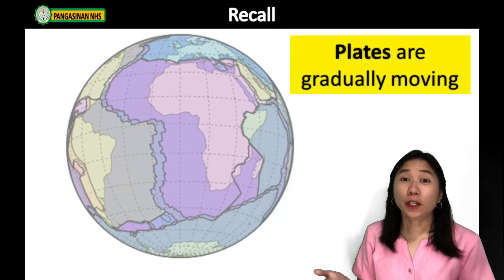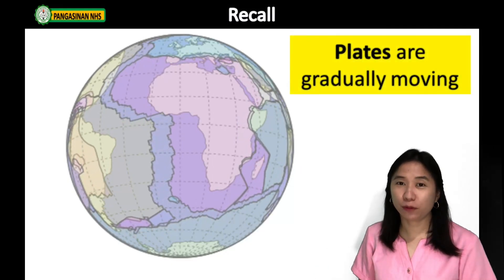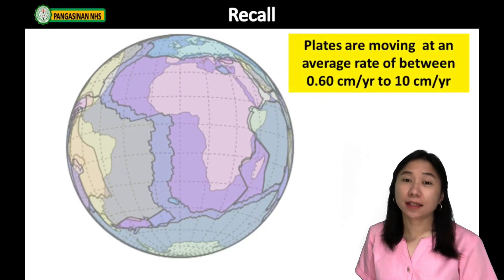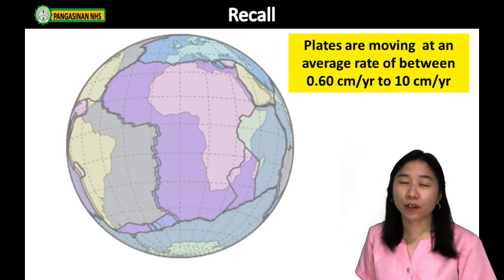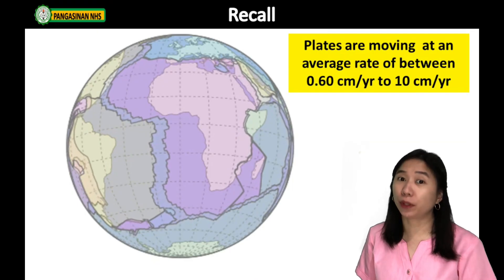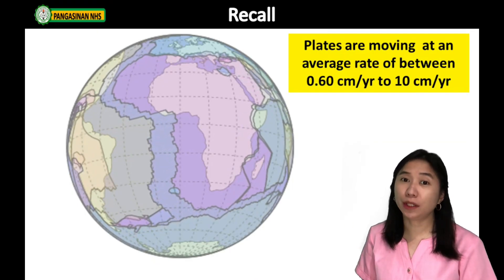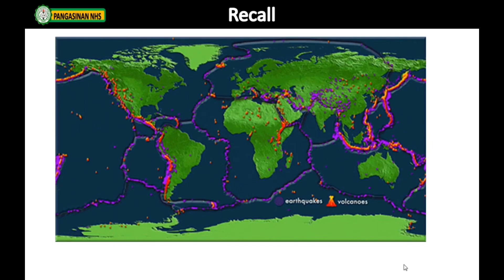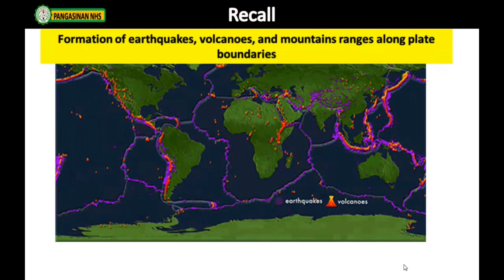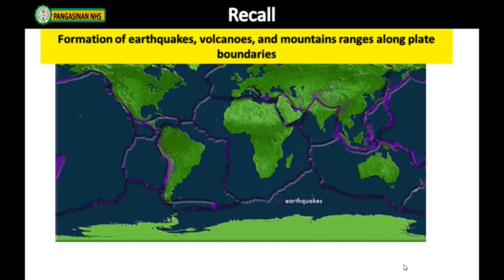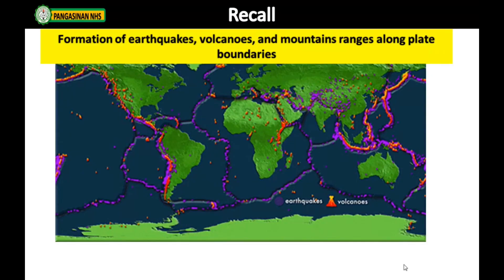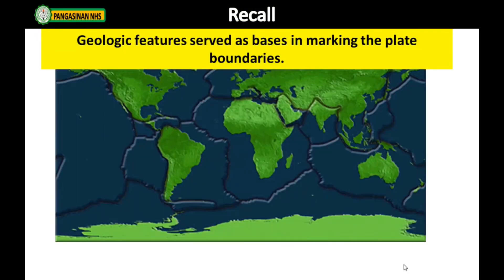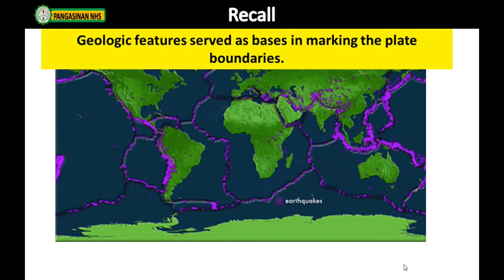You have also learned that plates are gradually moving. Research findings show that plates are moving at an average rate of 0.60 cm per year to 10 cm per year. As plates move, the majority of earthquakes, volcanic eruptions, and mountain ranges form along the plate boundaries. These geologic features serve as the basis for marking plate boundaries.